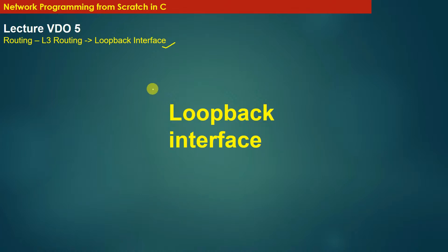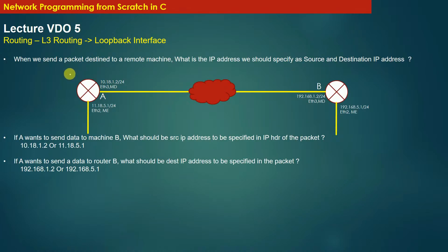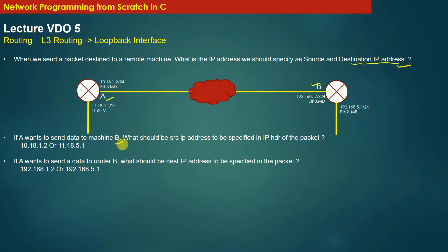An obvious question that naturally arises is: when we send a packet destined to a remote machine, what IP address should we specify as the source and destination? For example, if machine A wants to send a packet to machine B, what source IP address should it specify? Machine A has two interfaces — interface 1 with IP address 10.18.1.2 and interface 2 with IP address 11.18.5.1.